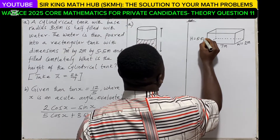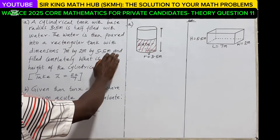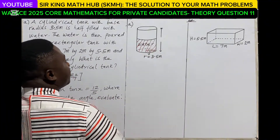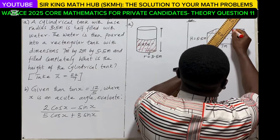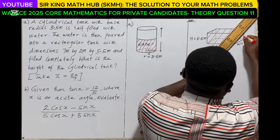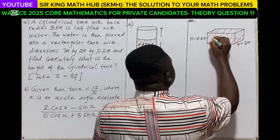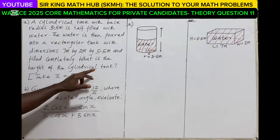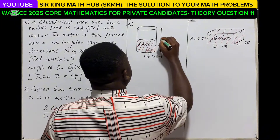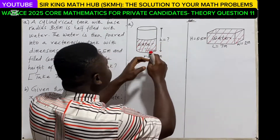The water was able to fill the entire rectangular tank completely. We have to find the height of the cylindrical tank. We are representing the height as h. The key idea is that the volume of water in the cylindrical tank must be equal to the volume of water in the rectangular tank.